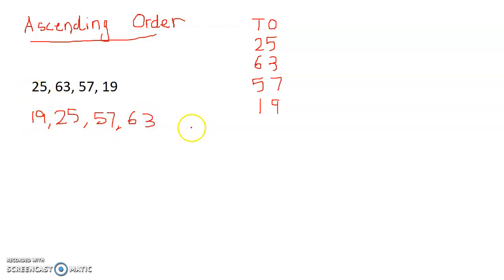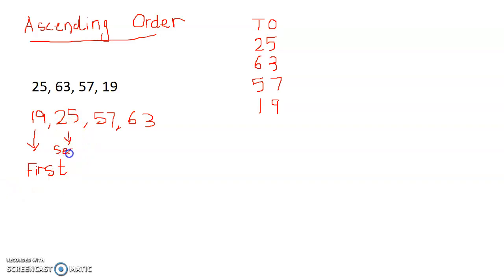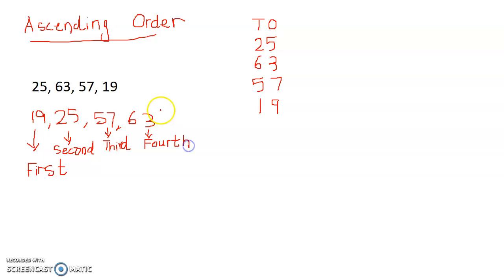When we arrange them in ascending order: 19 is the first number — the first ordinal position. The second number in the list is 25 — second. The third position in the list is 57 — third. And we can say 63 is the fourth in the list, and also the last in the list — the ordinal number is fourth.